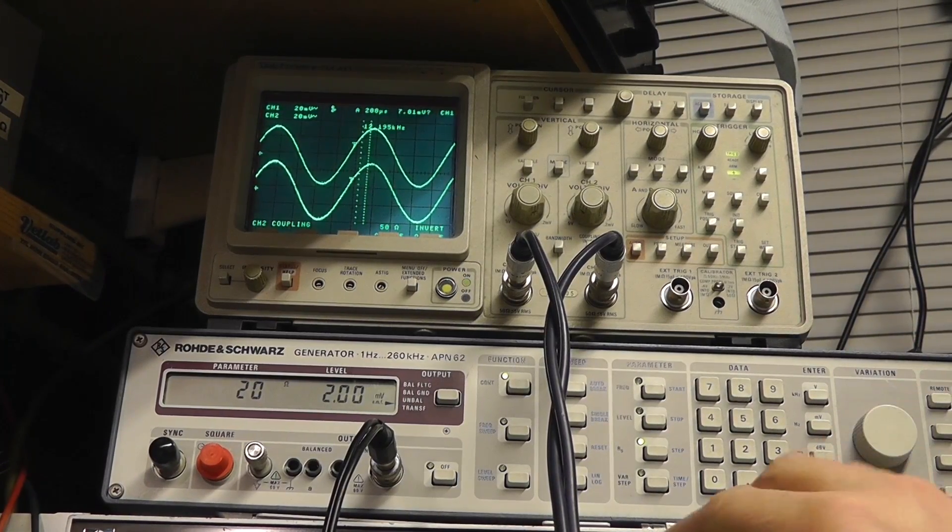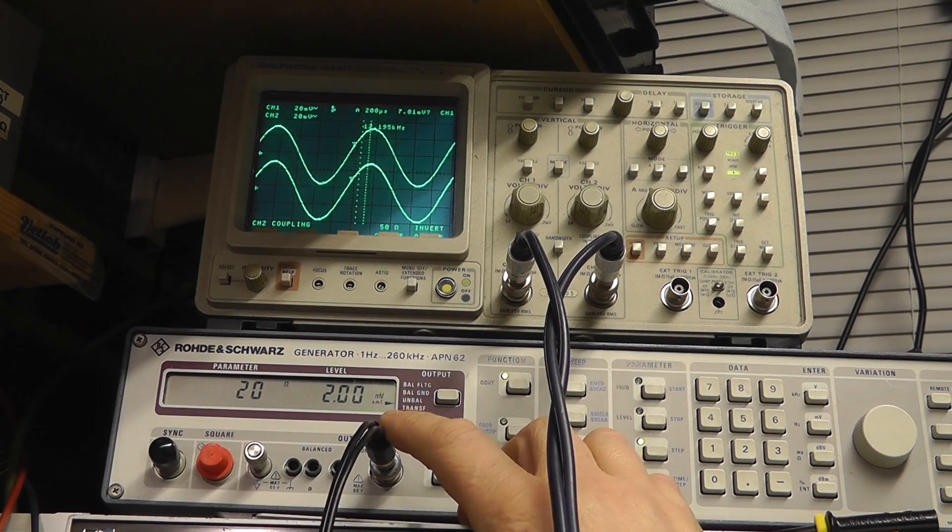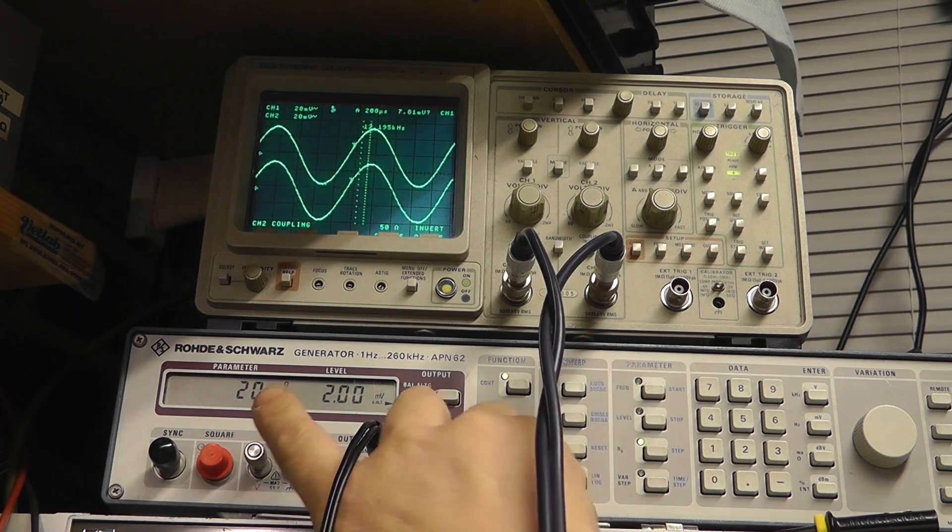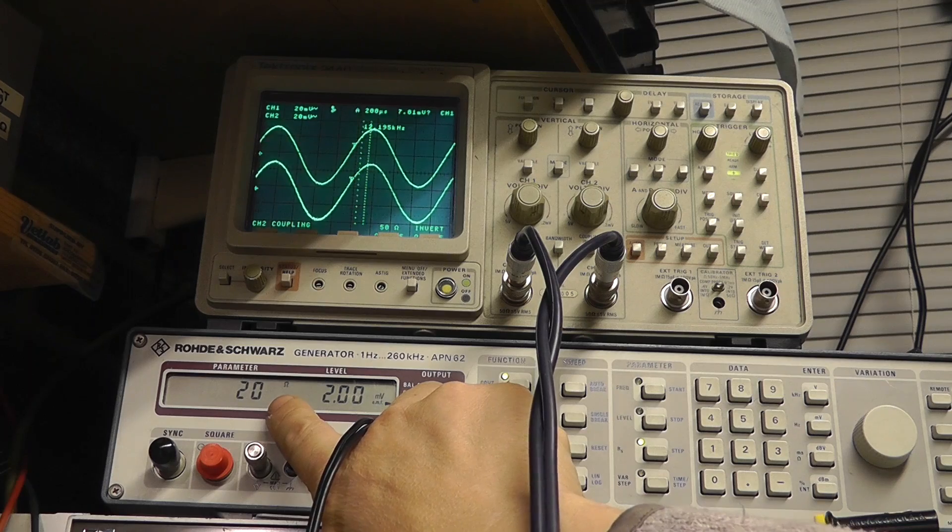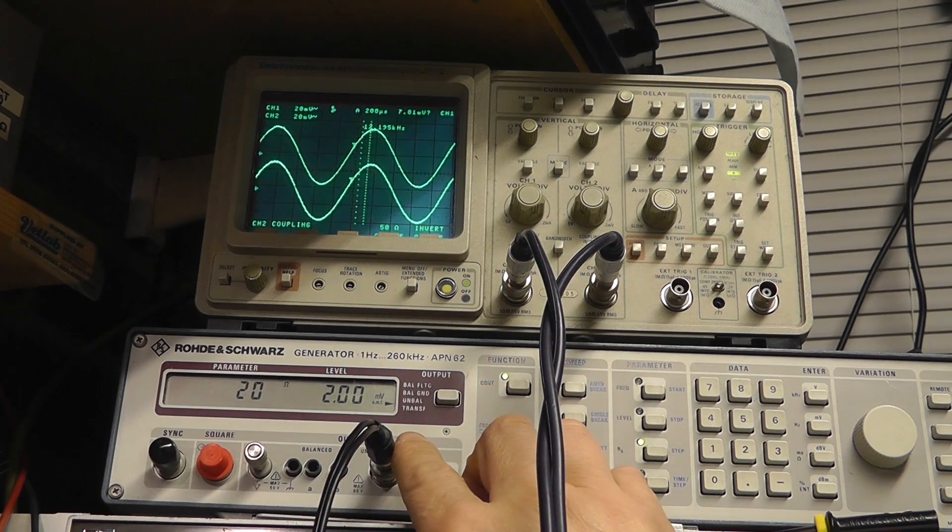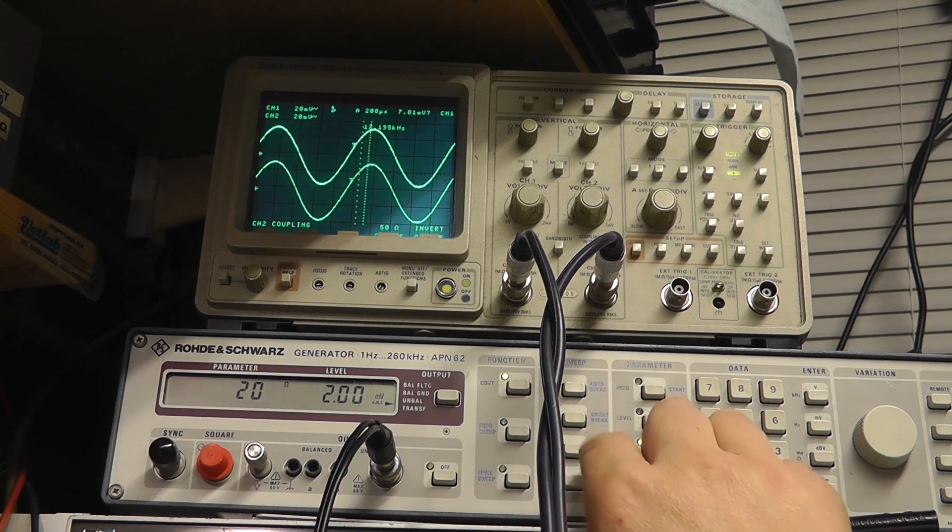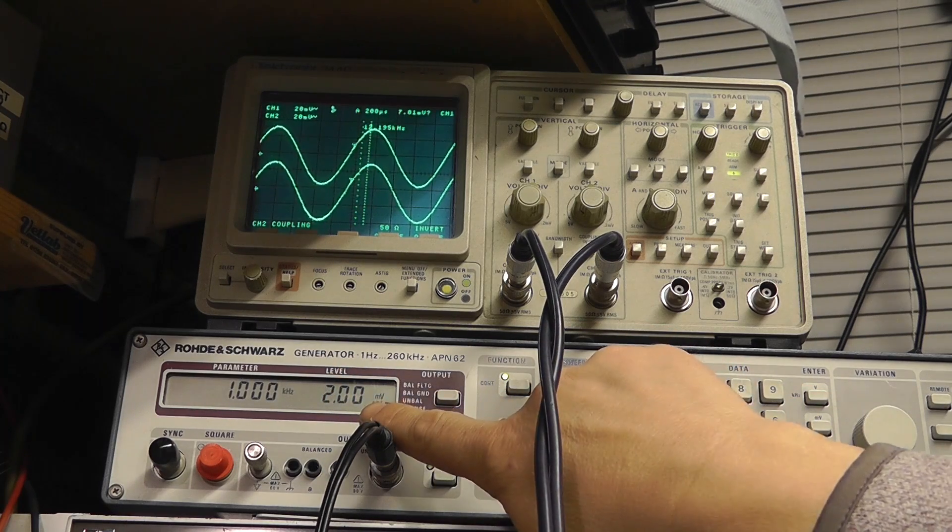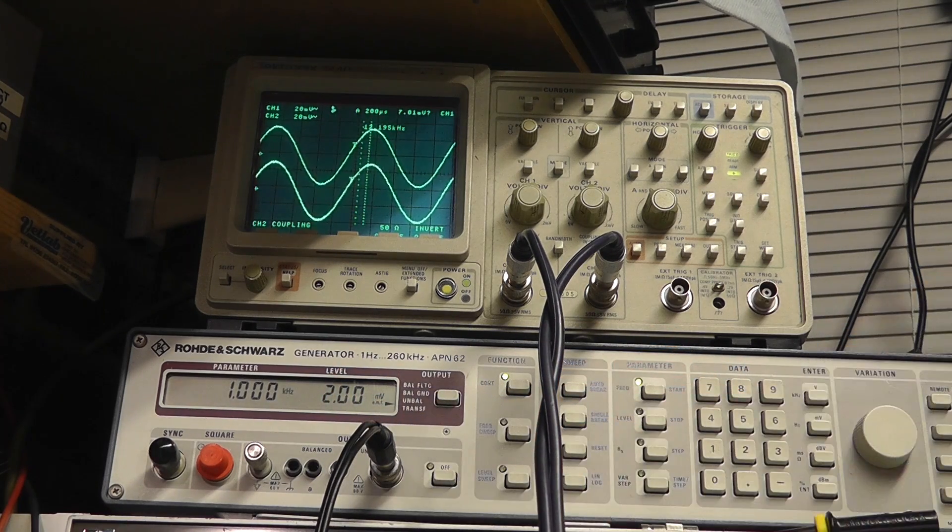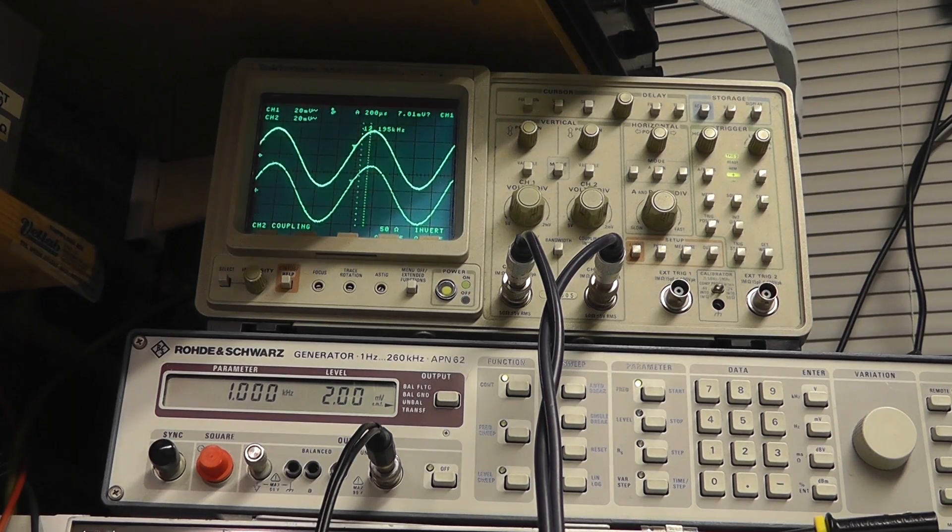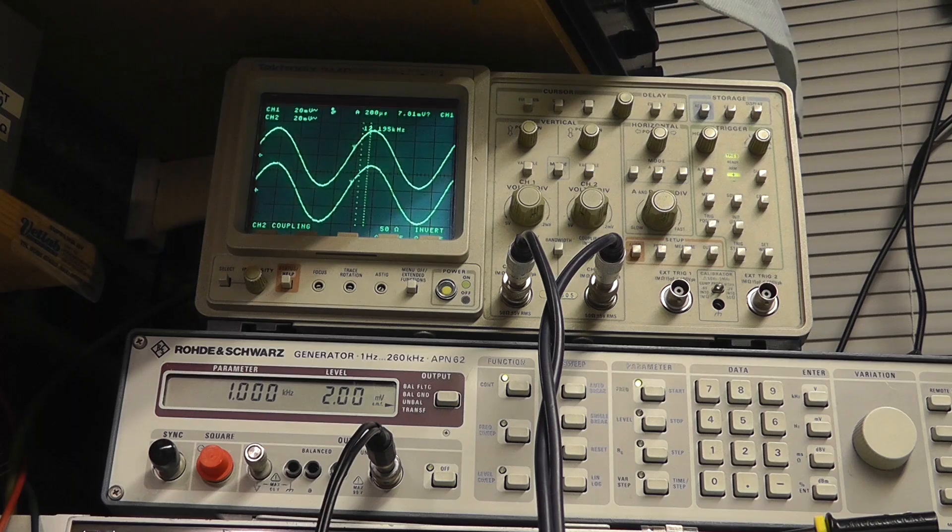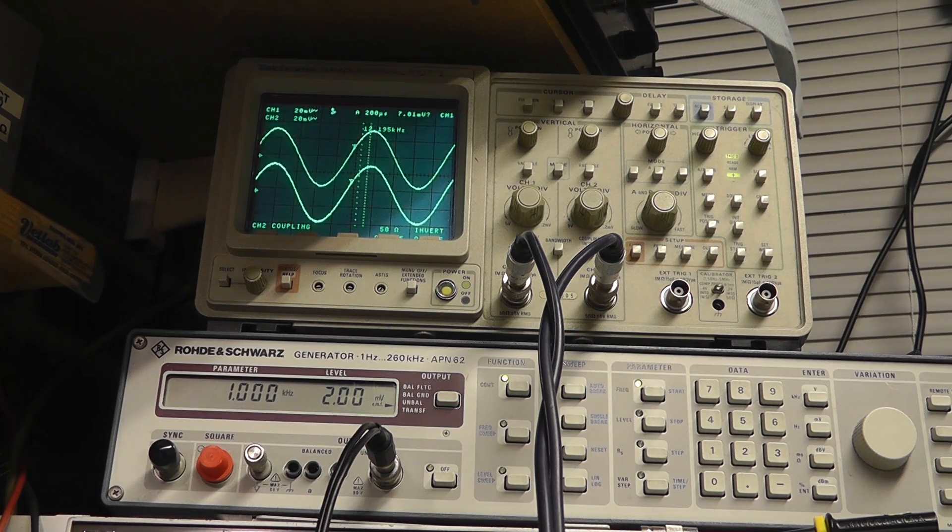Okay. What we're doing here is we're feeding the audio output from the Rohde & Schwarz signal generator. Our termination is at 20 ohms. So it's a 20 ohm source impedance. Our frequency is one kilohertz and our amplitude is two millivolts. We're feeding that into the transformer system or the transformer matching unit, moving coil transformer matching unit, whatever you want to call it, step up transformer.